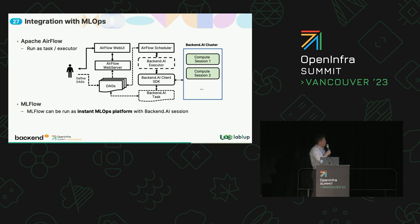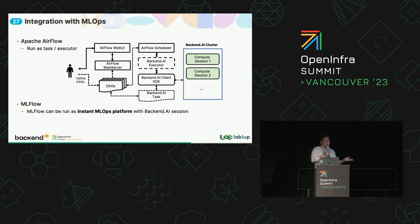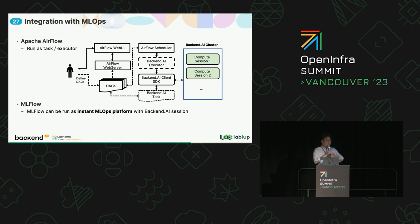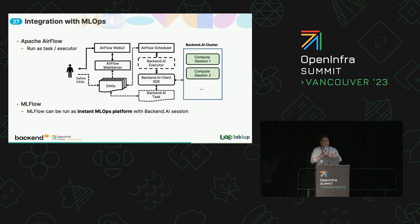We also have extra integrations with MLOps platforms — for example, Airflow and MLflow are currently the most well-known ones. For Airflow, we have two sizes of integration: you can run an entire Airflow application inside a container on top of Backend.AI as a Sokoban orchestrator, or you can plug the Backend.AI platform using its container and session management API to work as a backend scheduler framework of a standalone Airflow service.